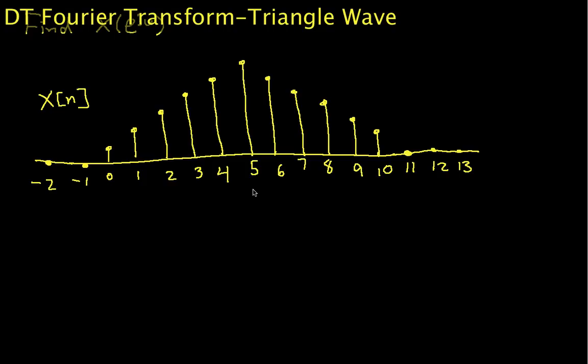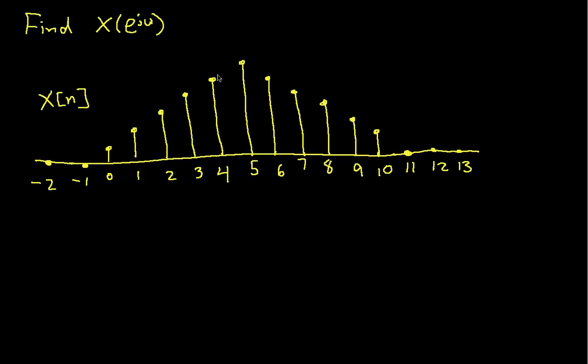It is a discrete time signal that is 0 for values of n less than 0, and at 0 it's 1, at 1 it's 2, 3, 4, 5, 6, and so on, and it goes back down to 5, 4, 3, 2, 1, and 0, and its value is 0 for values of n larger than 10.